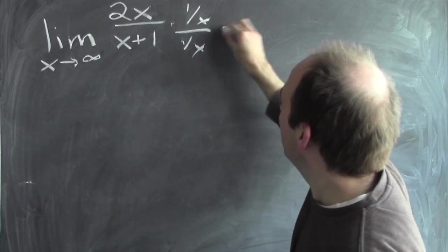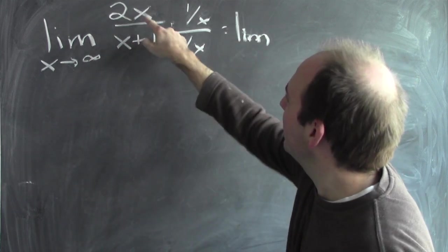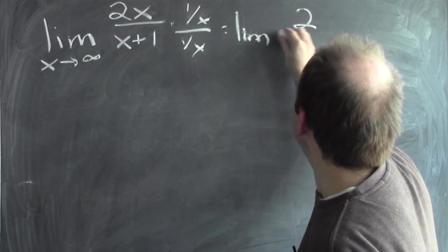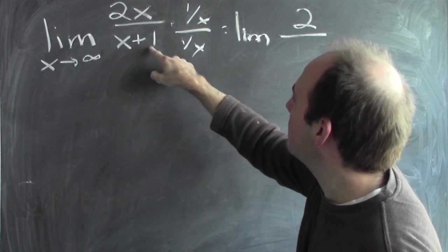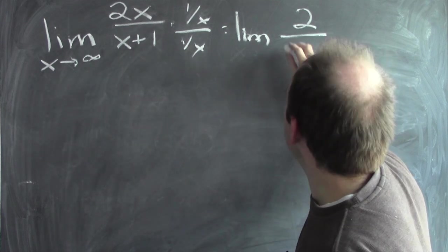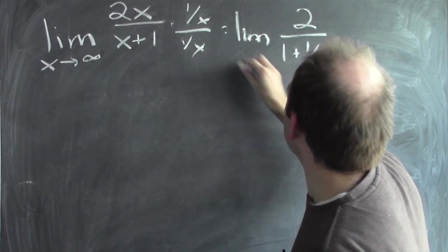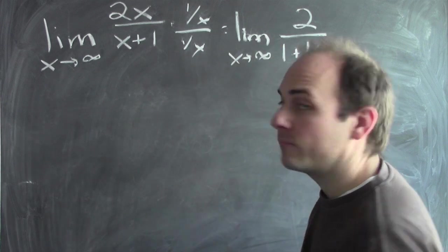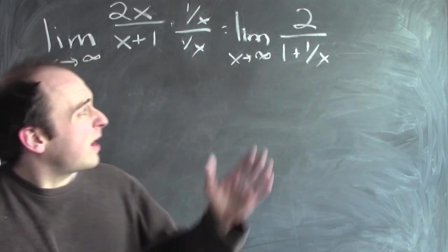Now, I'll do some algebra. This limit has now the limit of 2x times 1 over x, which is 2, divided by the limit of x plus 1 times 1 over x, which is 1 plus 1 over x.